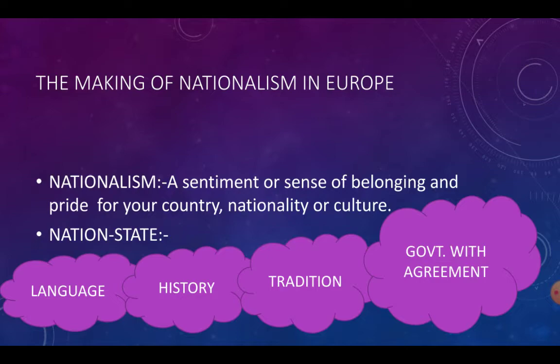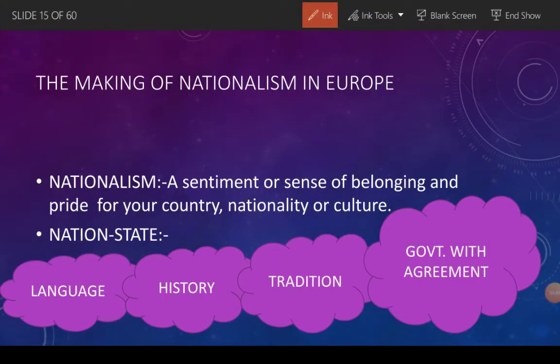But what is a nation-state? A nation-state is one where the majority of people, including its ruler, develop a sense of common identity and shared history, and agree on a government under which they all live together. Common identity and shared history — that is what defines a nation-state.